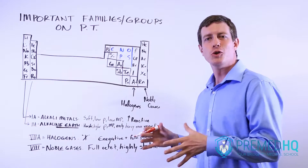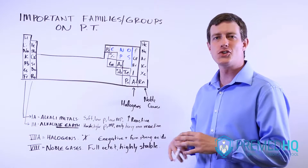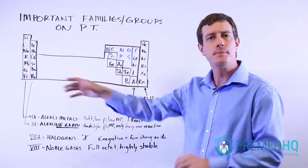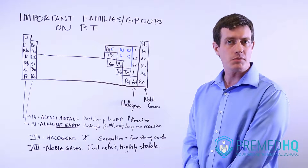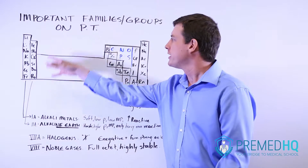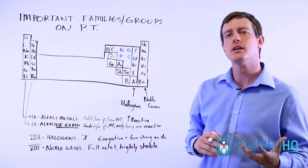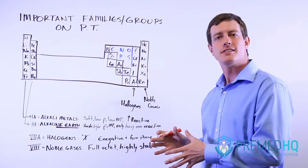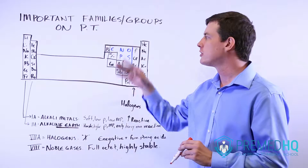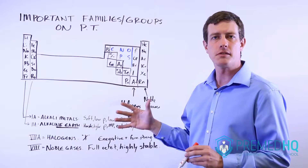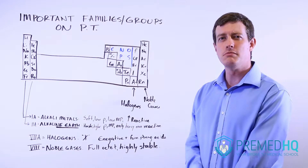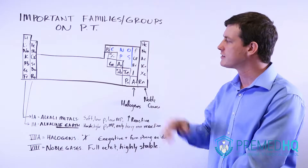A family or group refers to a particular column in the periodic table. Because of the way the periodic table is organized, each member of a family or group has the same number of valence electrons and thus behaves quite similarly to other members of its family. There are a few families you should be familiar with, and we'll go through those in this video.